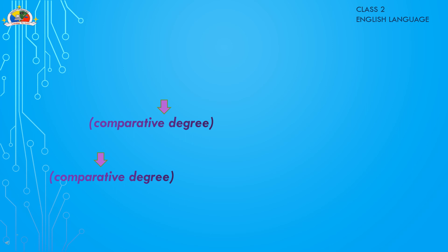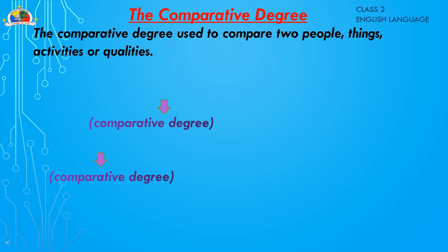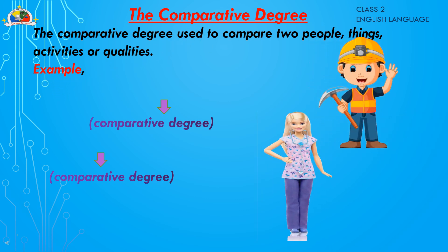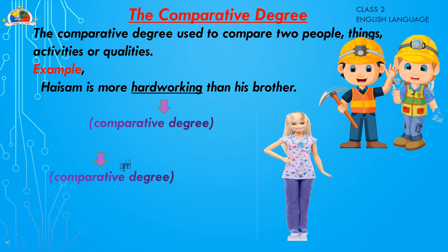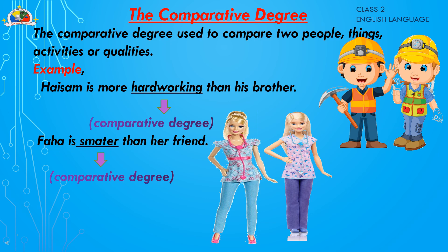The comparative degree is used to compare two people, things, activities, or qualities. For example, 'Hasam is more hard-working than his brother' — we are comparing Hasam's work with his brother's, so it's a comparative degree between two people. Similarly, 'Paha is smarter than her friend' — we are comparing Paha's smartness with her friend's, making a comparison between two people.